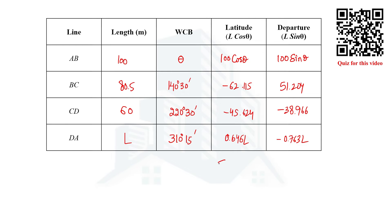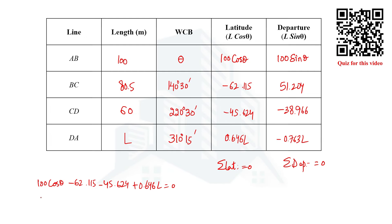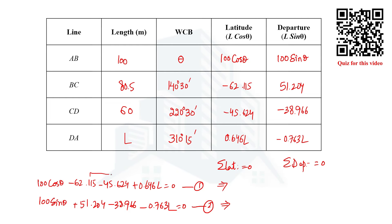In a closed traverse, the summation of latitudes equals zero and the summation of departures equals zero. This is because the starting point and end point are the same, meaning the net displacement is zero. We can use this to set up two equations in terms of theta and L. Adding all the latitudes gives equation 1, and adding all the departures gives equation 2. After further simplification, we get revised equations 3 and 4.